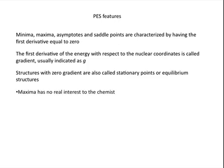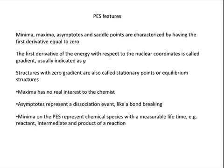Of all of them, maxima have no real interest to the chemist. Asymptotes represent a dissociation event, for example a bond breaking. On the other hand, minima of the potential energy surface are very important because they represent a chemical species with a measurable lifetime — for example, a reactant, intermediate, or product of a reaction.